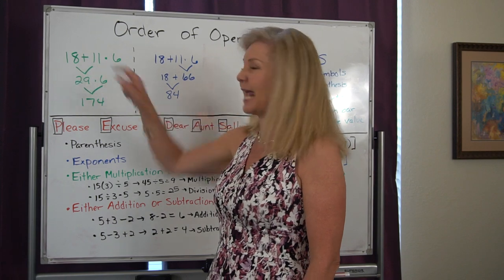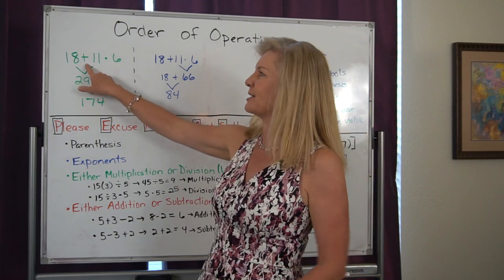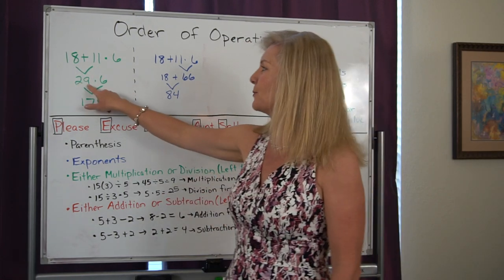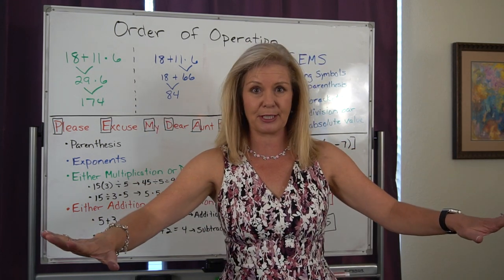If I were the first mathematician, I decided to do addition first. And if we do 18 plus 11, we get 29, and 29 times 6 is 174. Absolutely correct.